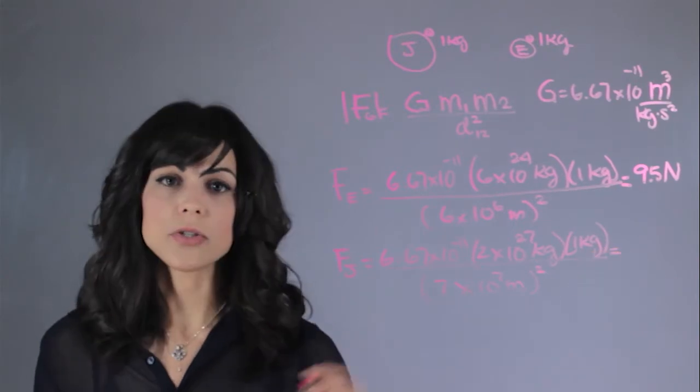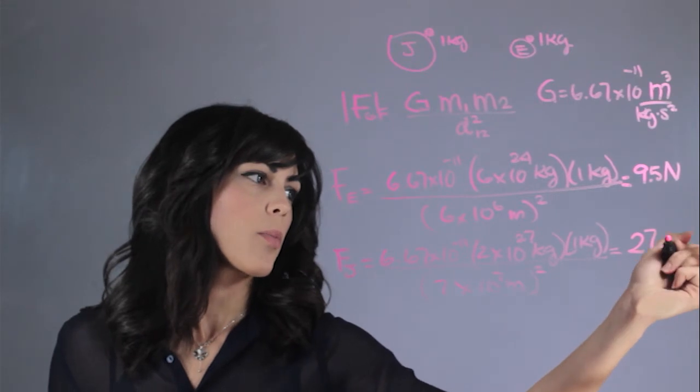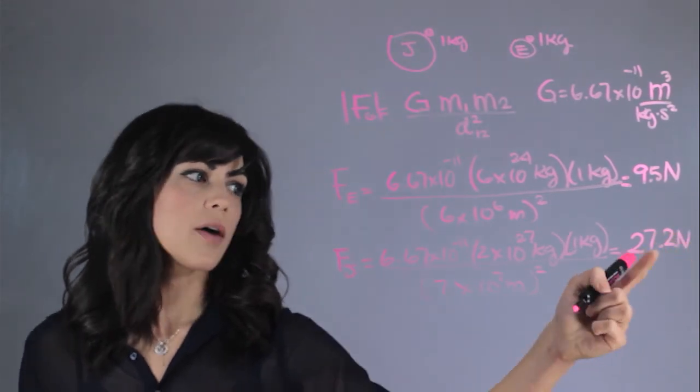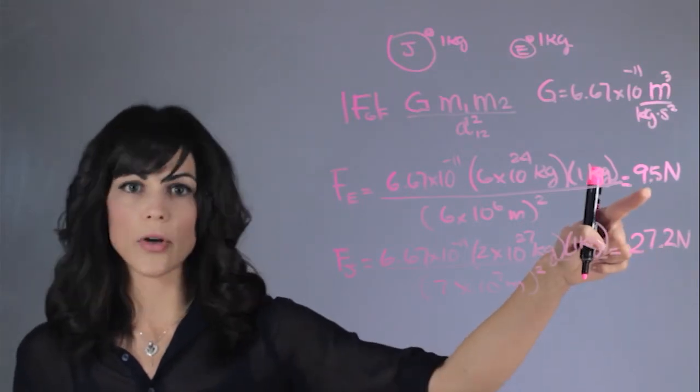If you plug this into your calculator, you get 27.2 Newtons. Obviously the rock at the surface of Jupiter is feeling a force way stronger than that on Earth.